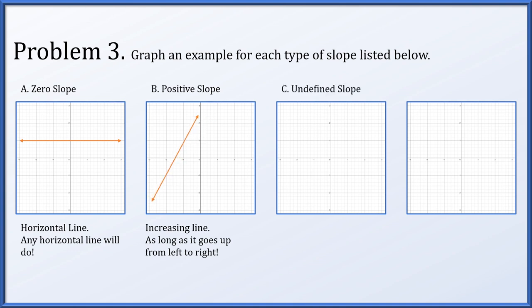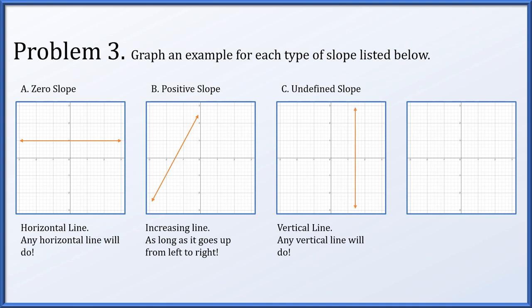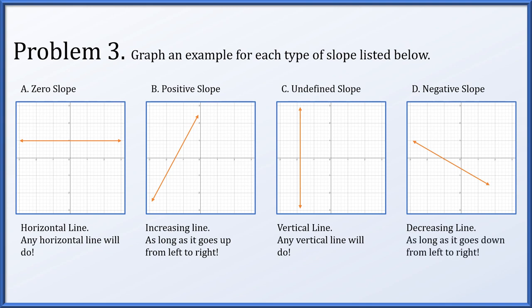And finally, a line of negative slope means decreasing as we move from left to right. Just like the positive slope case, this is not a unique solution. Anything that goes down from left to right would be perfectly fine, and these would all be perfectly good solutions.